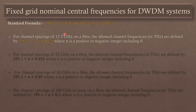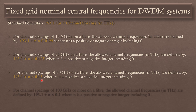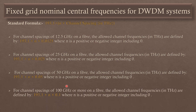Suppose we are using a channel spacing of 12.5 GHz on a fiber. The allowed channel frequencies in Terahertz are defined by 193.1 plus N times 0.0125, where N equals 0 towards positive and negative integers. For 25 GHz, we keep 0.025; for 50 GHz, we keep 0.05; and for 100 GHz the formula is similarly defined. We will work through examples to make this clear.